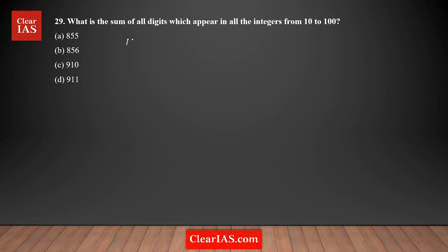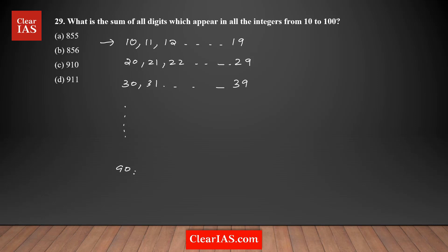We're going to form a list of numbers. Starting from 10, you have 10, 11, 12, and so on until 19 — that's the first set. Then starting from 20: 21, 22, and so on until 29. Similarly you have sets from 30 to 39, continuing until 90, 91, 92 up to 99. One more number is 100, since both 10 and 100 are included.